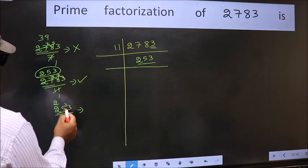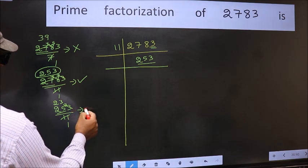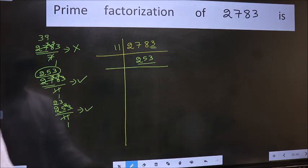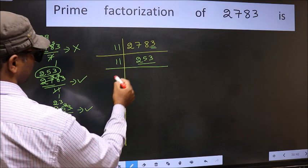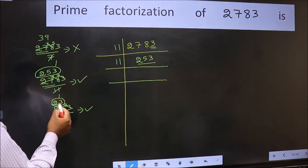When do we get 33 in 11 table? 11×3 is 33. No number has been left out. So this is divisible by 11. So 11 here. And here we should write this number 23.